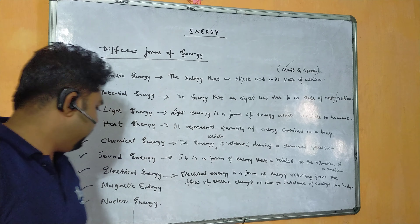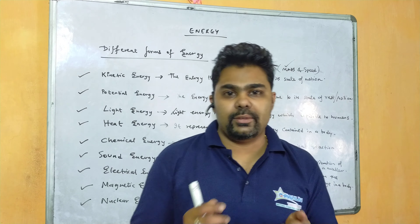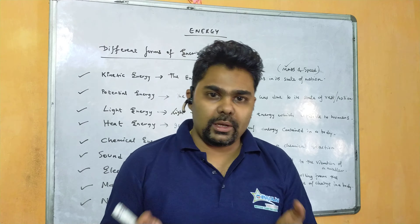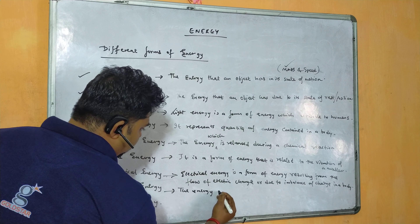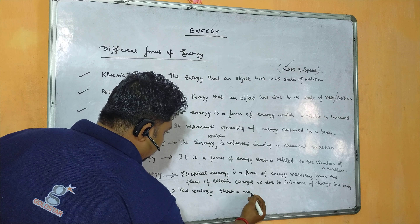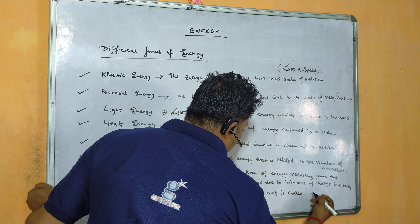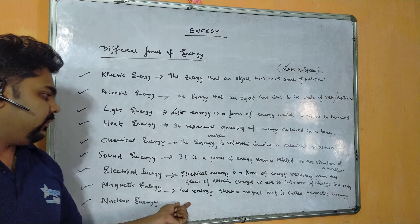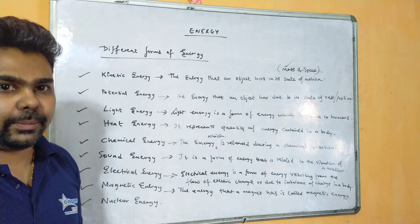Magnetic energy is the energy caused by attraction or repulsion between magnets. Like poles repel each other and unlike poles attract each other. The energy that a magnet possesses — whether used to attract or repel — is called magnetic energy.